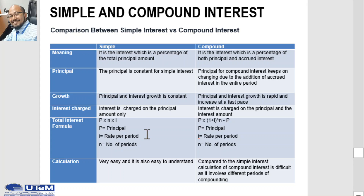In terms of growth, the principal and interest growth is constant for simple interest, but for compound interest, principal and interest growth is rapid and increases at a fast pace. In terms of interest charge, for simple interest it is charged on the principal amount only, while for compound interest it is charged on both the principal and the interest amount. The total interest formulas are different, and simple interest calculations are easier to understand, while compound interest is more complex as it involves different compounding periods.